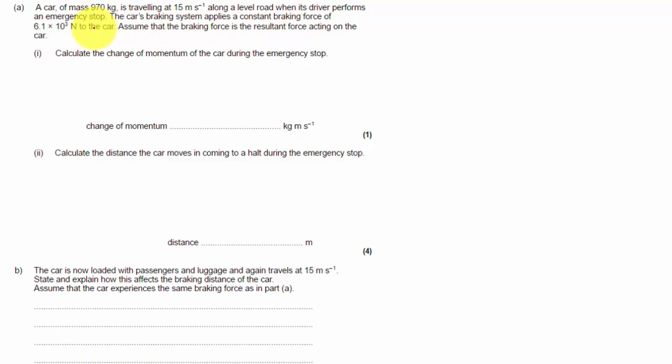We've got a constant braking force acting on the car. It says assume that the braking force is the resultant force, so no other forces are acting because this is the resultant force, so it doesn't get larger or smaller, it stays the same.